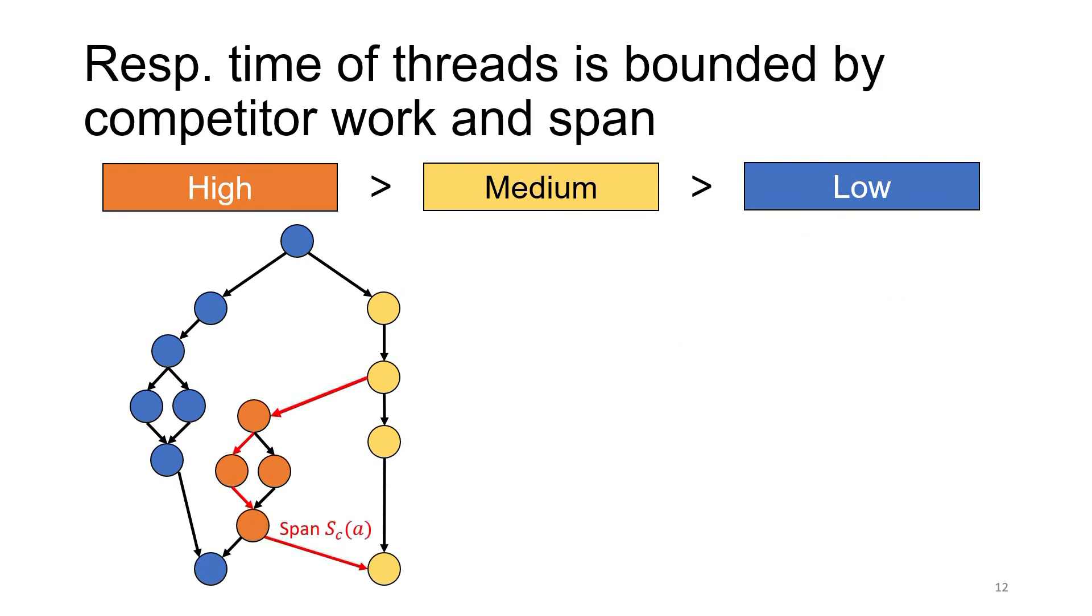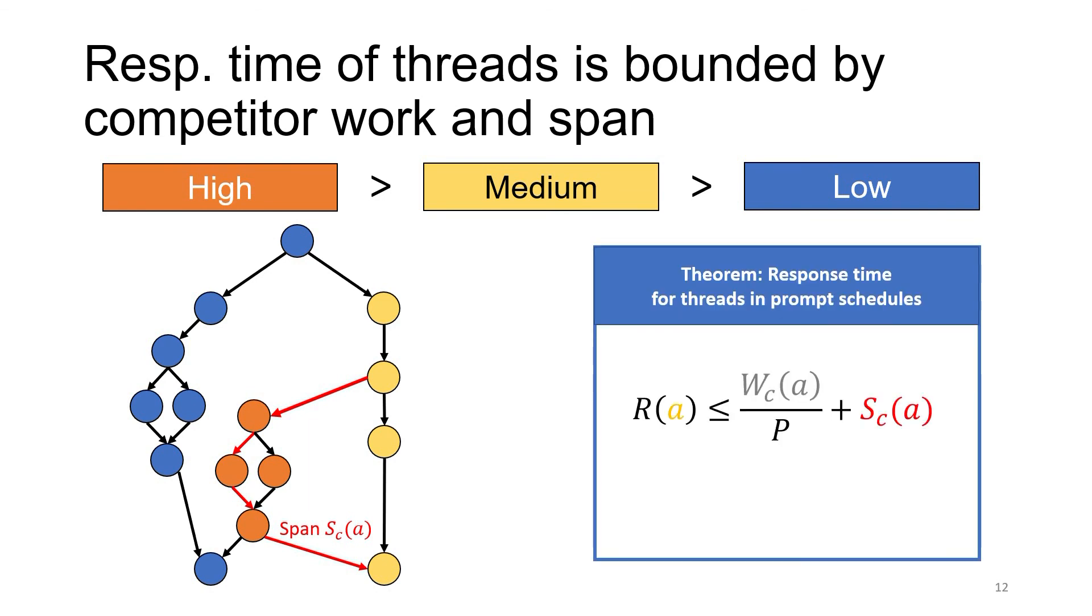With these definitions in place, for a prompt schedule and a thread in a DAG, we can bound the response time of the thread by a formula that depends only on the competitor work and span of a thread in the strengthening and the number of processors. This bound looks quite similar to the famous Brent's theorem for parallel scheduling and intuitively says that at each time step we're either doing p units of work for the competitor work or making progress along the critical path.